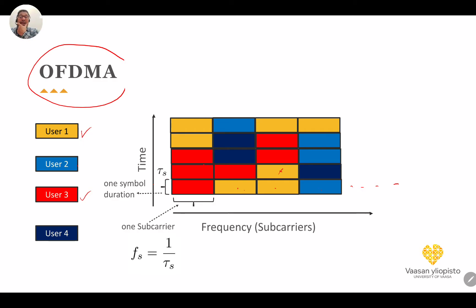We are talking about one antenna, but we can also do this for multiple antennas with MIMO, in which case it will be frequency-space coding. This is in the downlink.